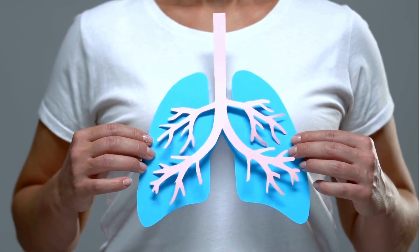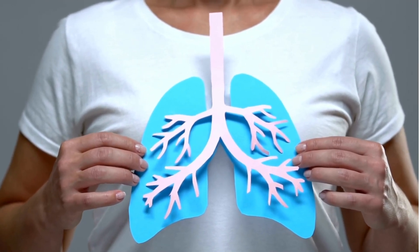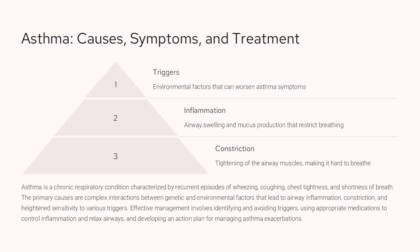Asthma is a chronic respiratory condition that causes recurrent episodes of wheezing, coughing, chest tightness, and shortness of breath. The main causes of asthma are a complex interaction between genetic and environmental factors. These factors lead to three key issues: triggers that worsen symptoms, inflammation that restricts breathing, and constriction of the airway muscles. Effective asthma management involves identifying and avoiding triggers, using medications to control inflammation and relax the airways, and having an action plan for managing exacerbations. Understanding these core elements — triggers, inflammation, and constriction — is crucial for effectively managing this chronic condition.